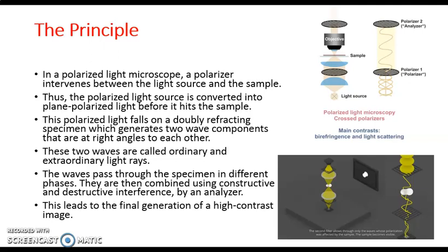The polarized light falls on a doubly refracted specimen. The specimen is doubly refracted, which generates two wave components that are at right angles to each other. These two waves are ordinary waves and extraordinary light rays, and these waves may pass through the specimen in different phases.